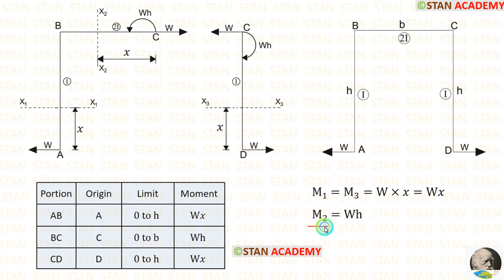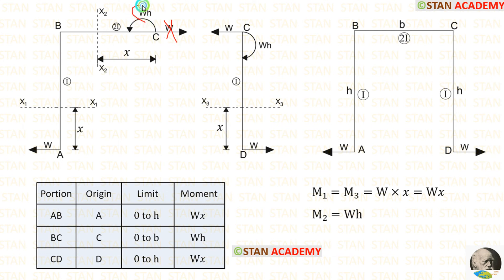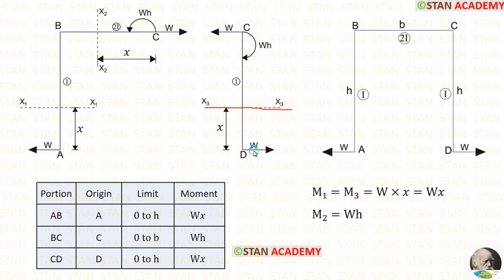Now let us calculate M2 by taking moment about the second section. Up to the section, we have one moment and a point load. This point load does not have any perpendicular distance, so we consider only the moment. Therefore M2 = WH. Now let us calculate M3 by taking moment about the third section. Up to the section, we have only one load W at distance X. So W into X gives M3 = WX. You can see that M1 and M3 are the same.